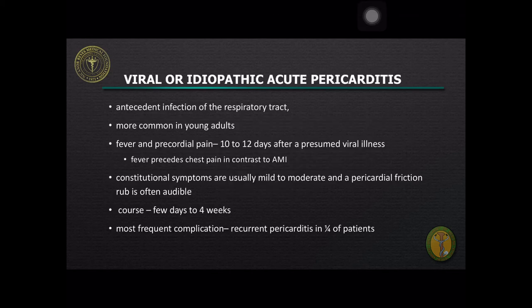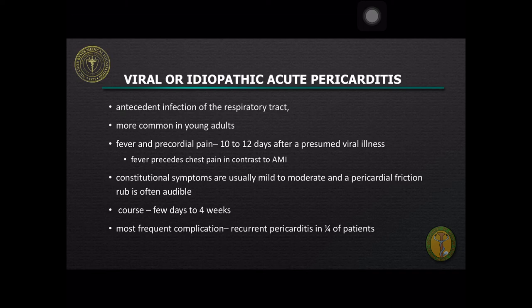Known or presumed viral cause of acute pericarditis usually has an antecedent upper respiratory tract infection. It is more common in young adults and presents with fever and precordial pain 10 to 12 days after a presumed viral illness. The fever precedes chest pain, in contrast to acute myocardial infarction. Constitutional symptoms are usually mild to moderate and a pericardial friction rub is often audible. The course may last for a few days to 4 weeks and the most frequent complication is recurrent pericarditis in one-fourth of patients.